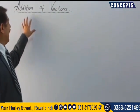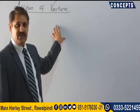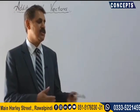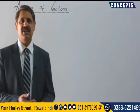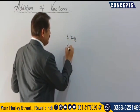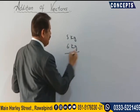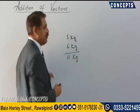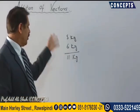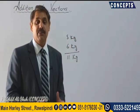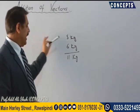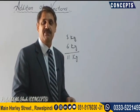Today we'll discuss addition of vectors. Addition of vectors is not as simple as adding scalar quantities. Scalar quantities are added arithmetically — for example, 5 kg plus 6 kg equals 11 kg, and no other answer is possible. But in the case of vector quantities, we cannot add them just by the arithmetic way.